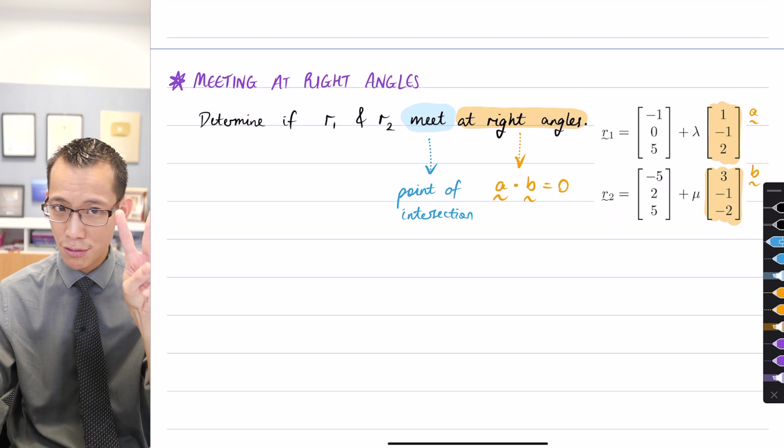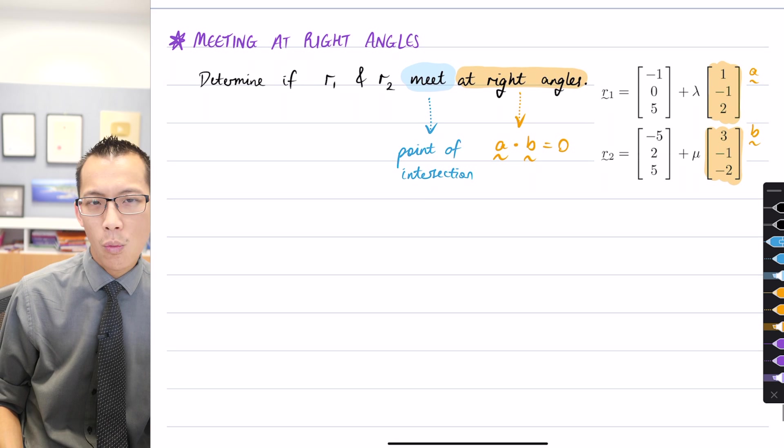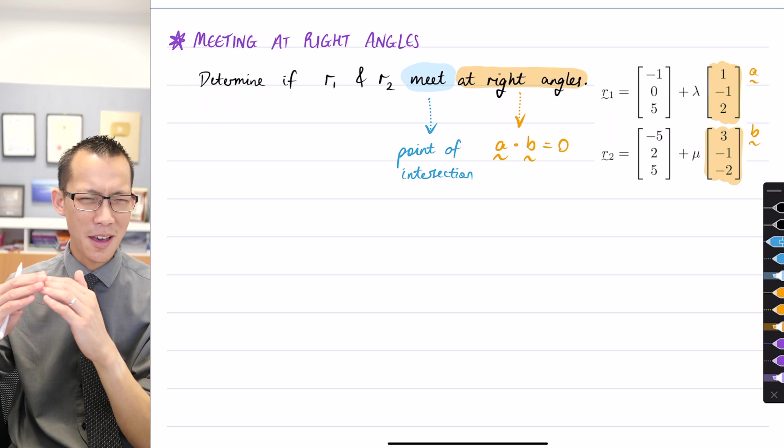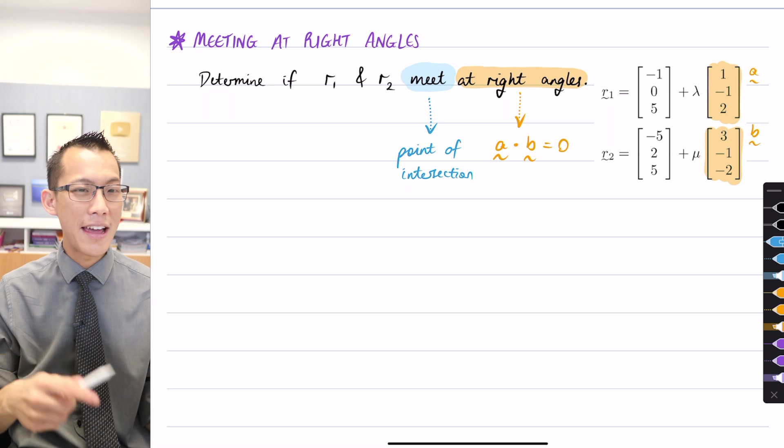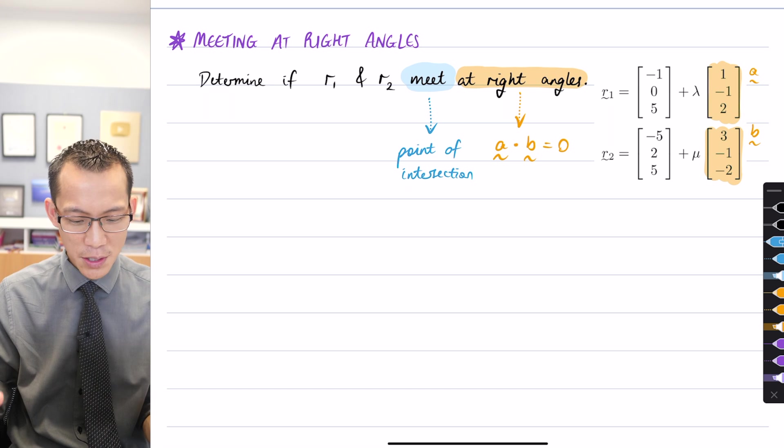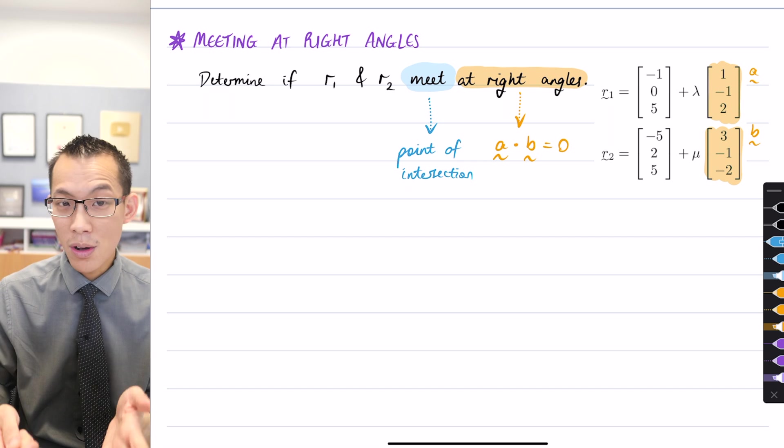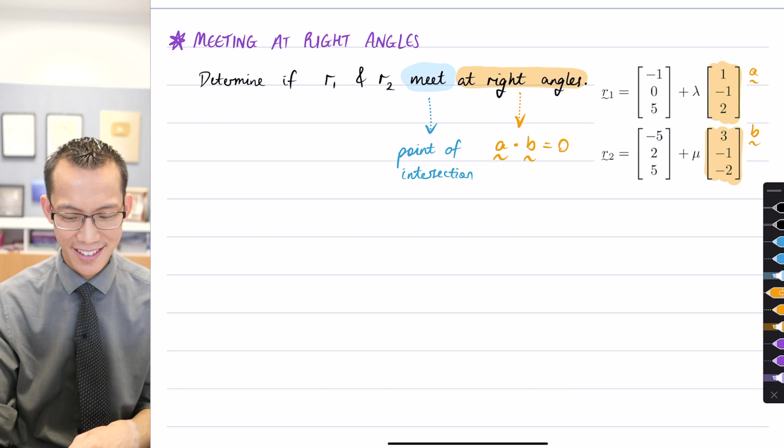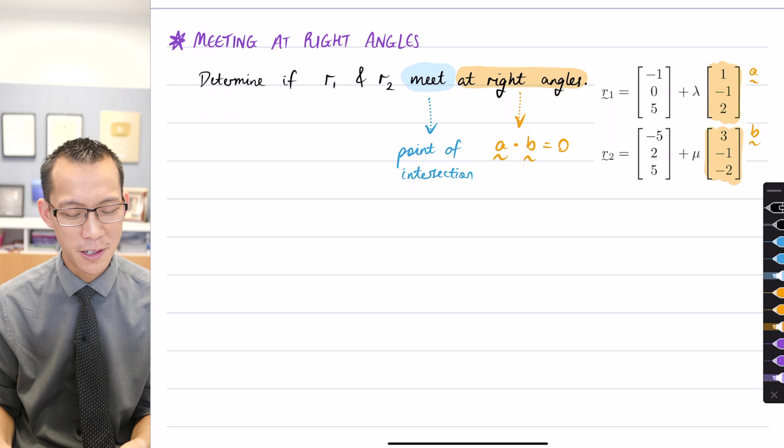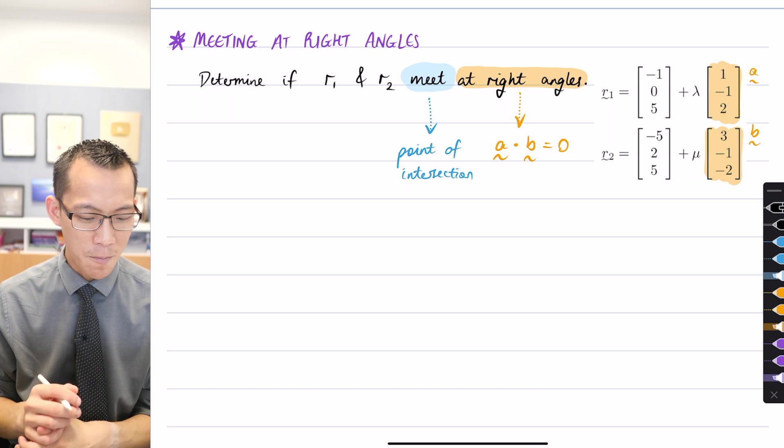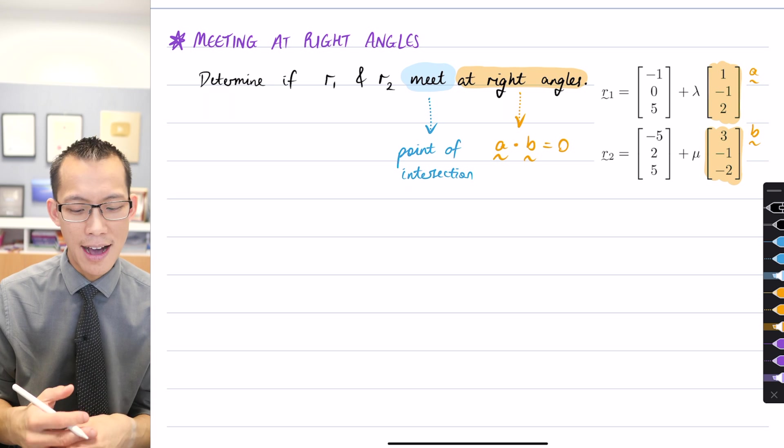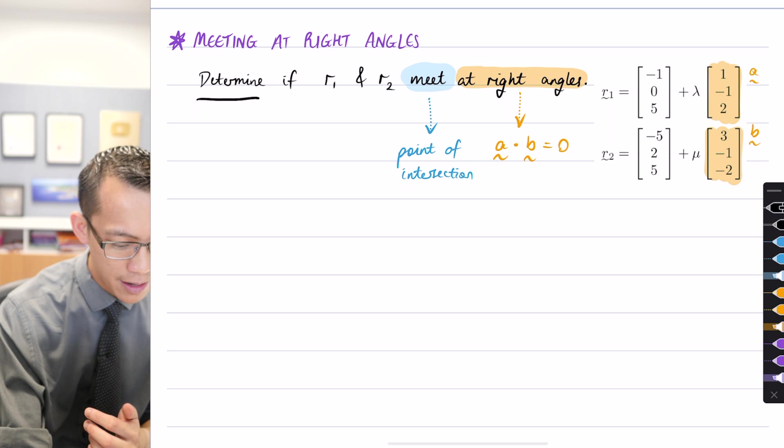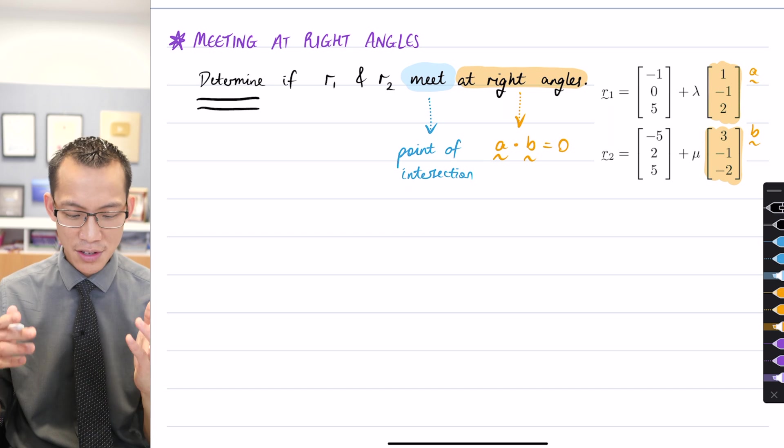These are the two things we have to do. My question to all of you is which condition should I try to meet first, because one of these things is easier to work out than the other and it would feel really silly to do the hard one first, go through all of this work, and then find out the other one doesn't work. So out of these two things, finding a point of intersection or working out a dot product, which would you think is easier? Yeah, absolutely.